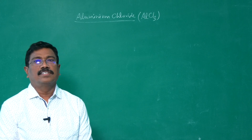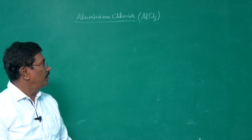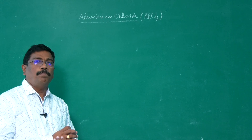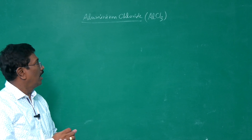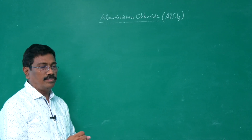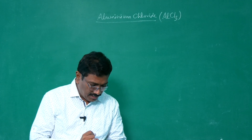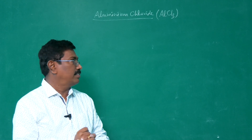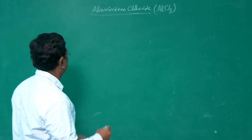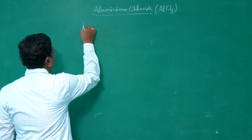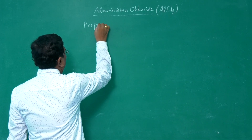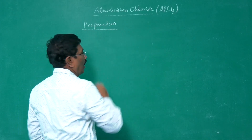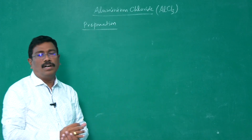In this session we are going to study the preparation, properties, and uses of aluminium chloride. Aluminium chloride is a colorless, hygroscopic substance.